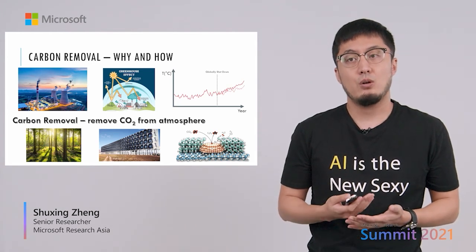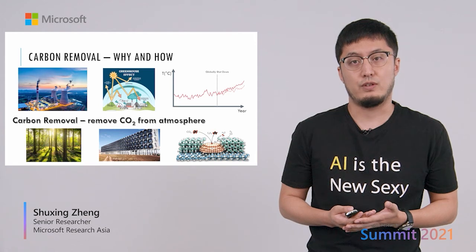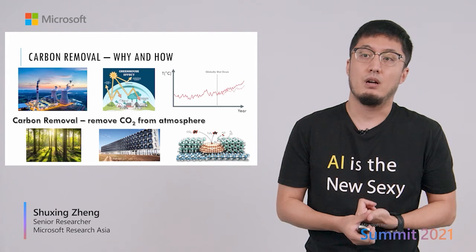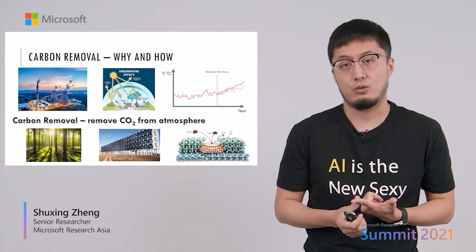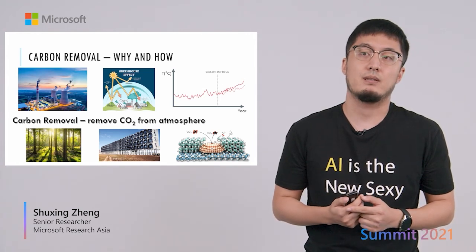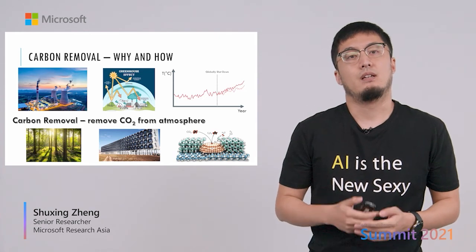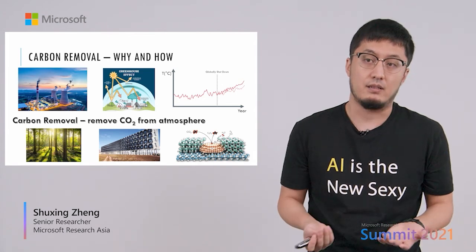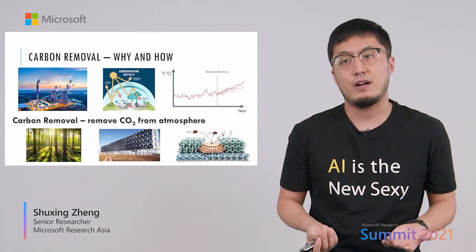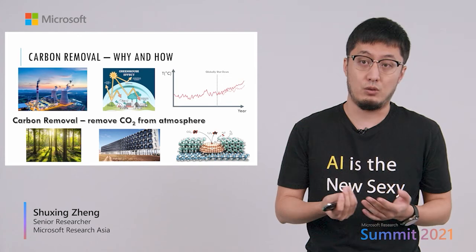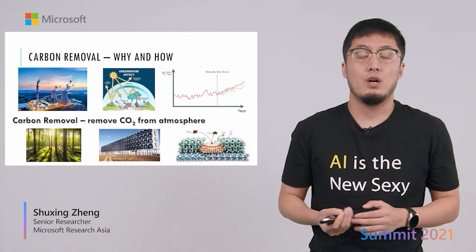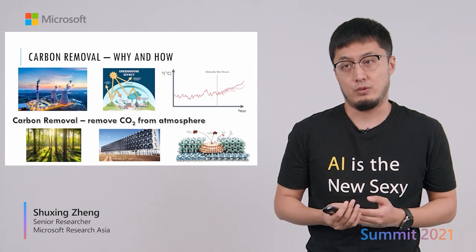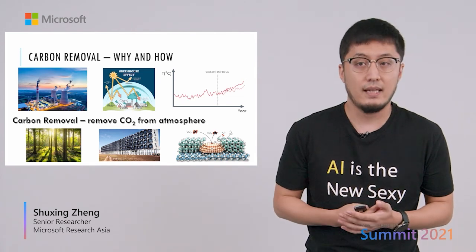Therefore, we must figure out how to remove existing CO2 from the atmosphere. There are two traditional ways: plant trees or physically absorb CO2 from the air, but they are both inefficient. Even if we planted trees on every piece of land on Earth, it would still be far from enough to remove the CO2 in the atmosphere. We urgently need more efficient ways for carbon removal. Maybe the answer is a carbon removal catalyst — if we could discover a catalyst that decomposes CO2 into other useful materials, the global climate change disaster could be largely mitigated.